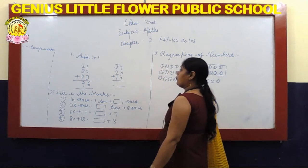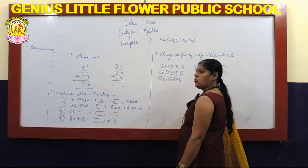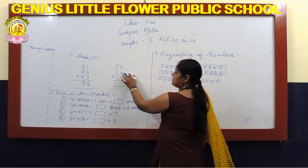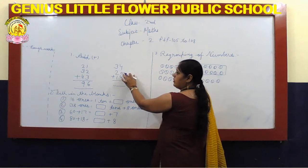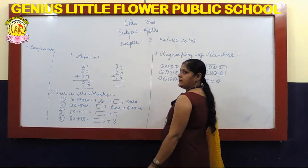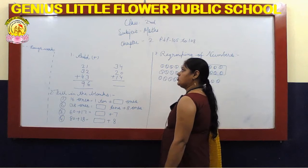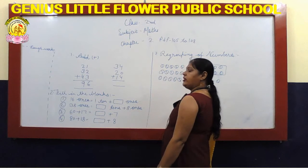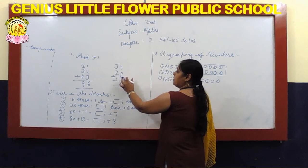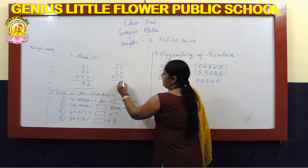Next. 4 plus 0 plus 4. 4 plus 0 is equal to 4. So, 0 ko kisi bhi number mein add karte hain toh wo number change nahi hota hai — vohi ka vohi rehta hai. 4 plus 0 plus 4 is equal to 8.